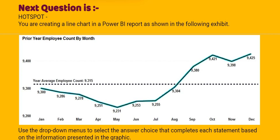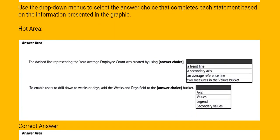Our question is: you are creating a line chart in the Power BI report as shown in the following exhibit. Use the drop-down menus to select the answer choice that completes each statement based on the information presented in the graphic. The dashed line representing a year average employee count was created by using: a trend line, a secondary axis, an average reference line, or two measures in the values bucket.